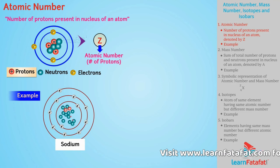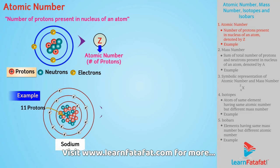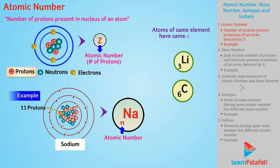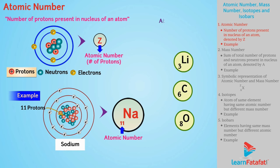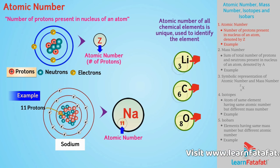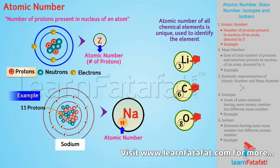For example, sodium has 11 protons in its nucleus. Hence, the atomic number of sodium is 11. Atoms of the same element have the same atomic number — all atoms of sodium will have atomic number 11. The atomic number of all chemical elements is unique, which is used to identify that element. Only sodium will have atomic number 11, and hence atomic number 11 defines the sodium element.